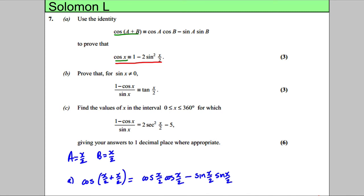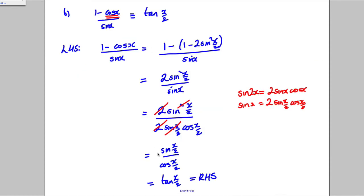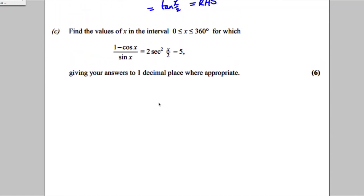Okay, then last part, part C, we're asked to find the values and solve an equation. So let me just take a snapshot of this here. So going down here, we're asked to solve this. Now, this should look familiar to you here. This is something we've got an identity for in part B. And the identity we had was tan X over 2. So tan X over 2 is 2 sec squared X over 2 subtract 5.